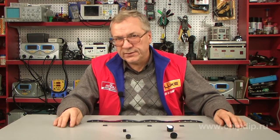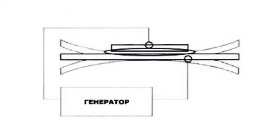When AC current is applied across the electrodes, the diaphragm alternates bending in two directions. The repeated bending motion produces sound waves in the air.